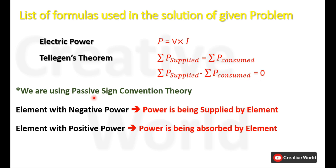We will also be using passive sign convention theory. According to this theory, elements with negative power will be considered as power suppliers and elements with positive power will be considered as power absorbers.